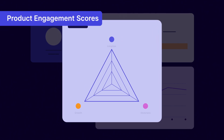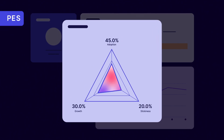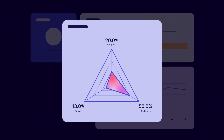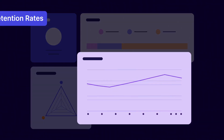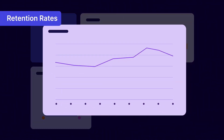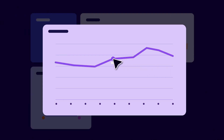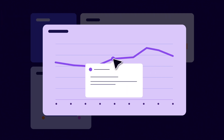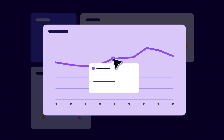Using the Product Engagement Score, or PES, which combines stickiness, adoption, and growth rates, can determine whether your onboarding efforts are having an impact on product health. Also keep an eye on retention rates. If they went up after implementing an onboarding process, that's a sign that the extra guidance is helping users find value.